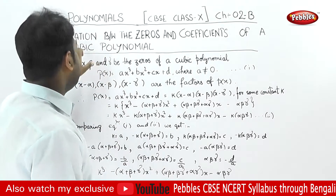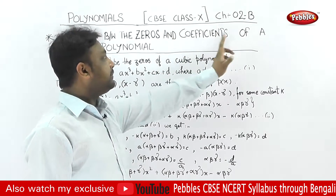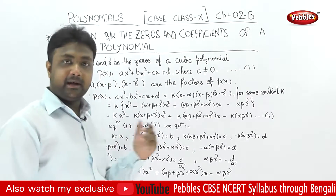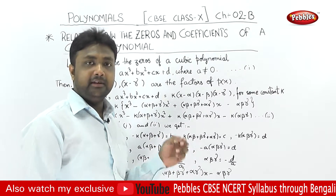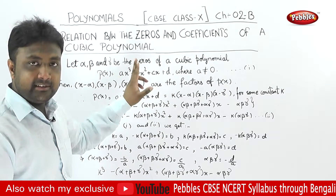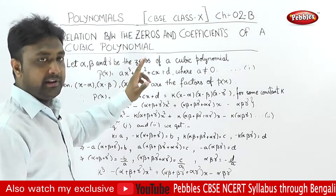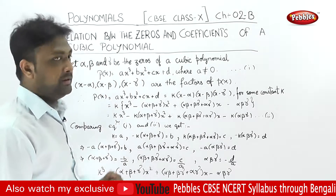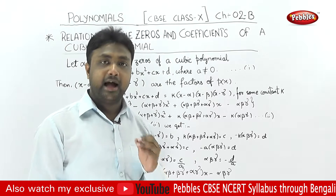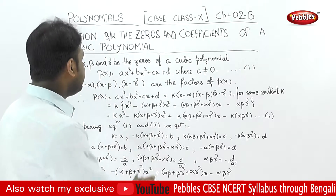Let us talk about the relation between the zeros and coefficients of a cubic polynomial. Let us see the relationship between zeros and coefficients. We have cubic polynomials — what do we call the cubic polynomial? The highest degree is 3.